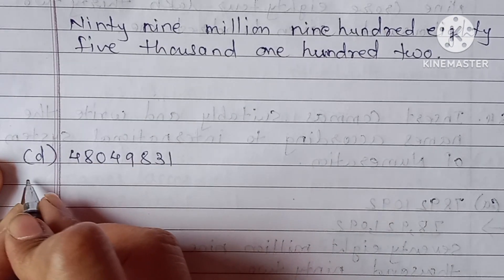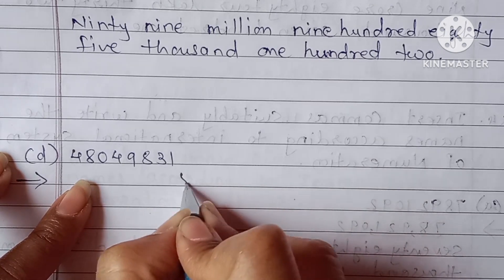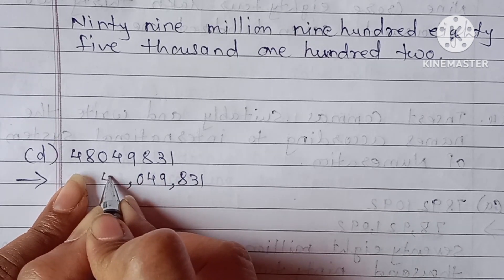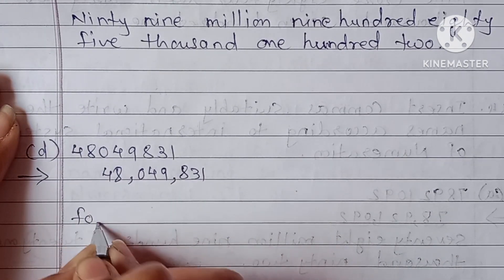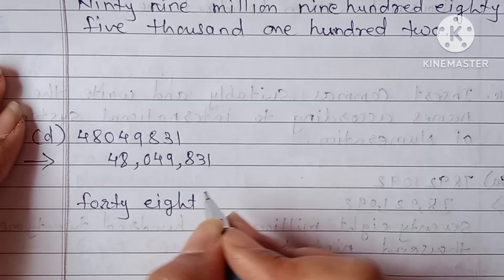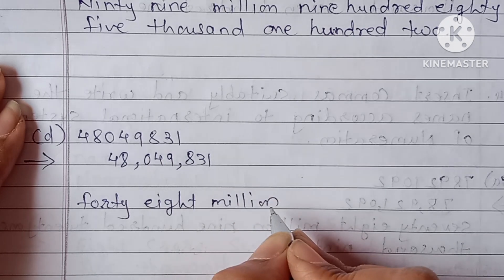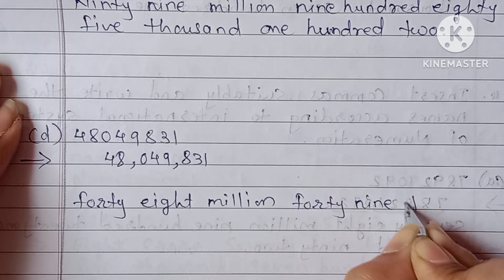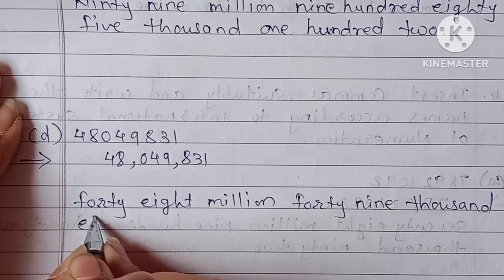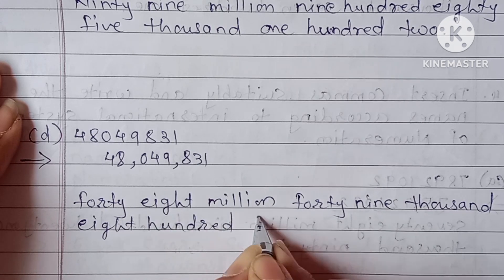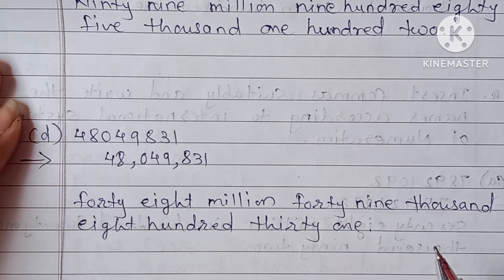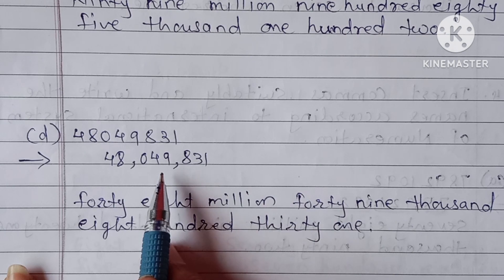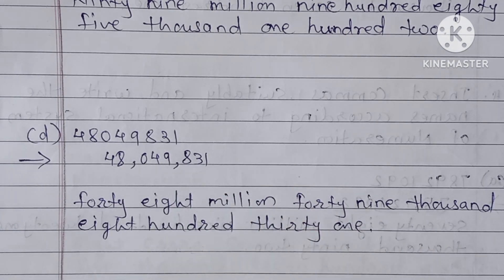Next number: 48,049,831. After three digits comma, then three digits comma. So: 48 million, 49 thousand, eight hundred and thirty-one. The answer is forty-eight million forty-nine thousand eight hundred and thirty-one. Thank you for watching the video.